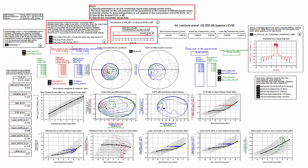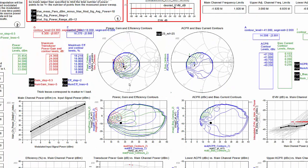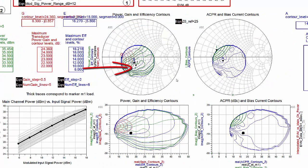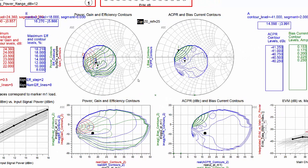This shows contours of output power and efficiency at a specified EVM level. It indicates, for a particular modulated signal, the optimal reflection coefficient to maximize power or areas of the Smith chart where the output power is above some level while satisfying an EVM requirement.